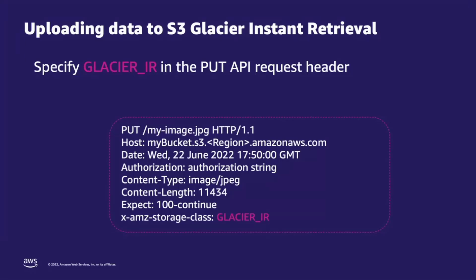It's really easy to get started with S3 Glacier Instant Retrieval. You can upload data directly to the storage class or set lifecycle policies to transition objects from S3 Standard or S3 Standard Infrequent Access to S3 Glacier Instant Retrieval. To upload directly, you can specify glacier_IR in the PUT API request header to write objects directly to the storage class. Customers should upload directly if they know their data is rarely accessed right at ingest.